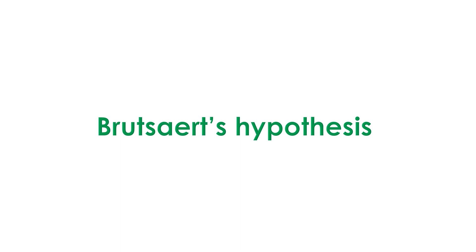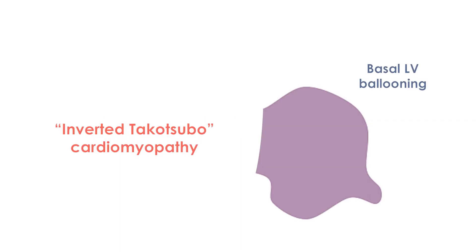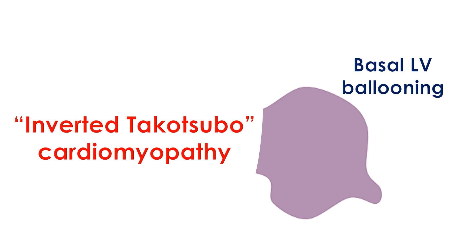However, this would not explain the midventricular variant of Takoshibokardiomyopathy or the inverted Takoshibokardiomyopathy. Inverted Takoshibokardiomyopathy is a variant in which there is hyperkinesis of the apex with midventricular ballooning, unlike the reverse pattern seen in classical Takoshibokardiomyopathy.